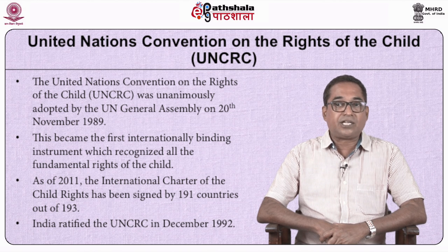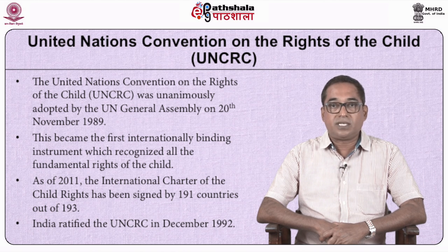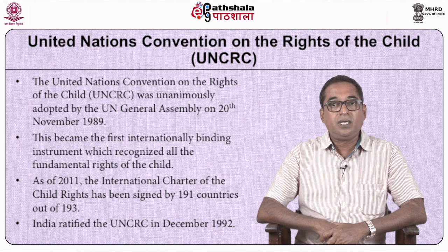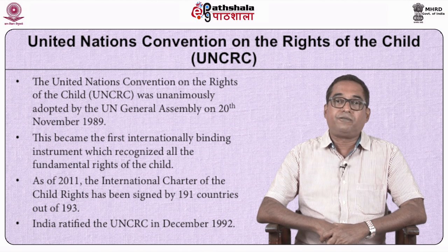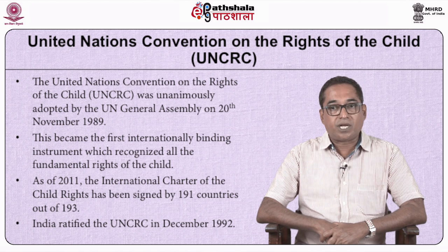The UNCRC became the first internationally binding instrument recognizing all the fundamental rights of the child. It gave legal expression to the notion that children have independent human rights at the heart of all political, economic, and social decision-making. Its 54 articles describe the economic, social, and cultural rights of children, enshrining general principles of non-discrimination, best interests of the child, right to life, survival and development, and respect for the views of the child. It elaborates specific civil rights and freedoms, family environment and alternative care, basic health and welfare, education, leisure and cultural activities, and special protection measures.